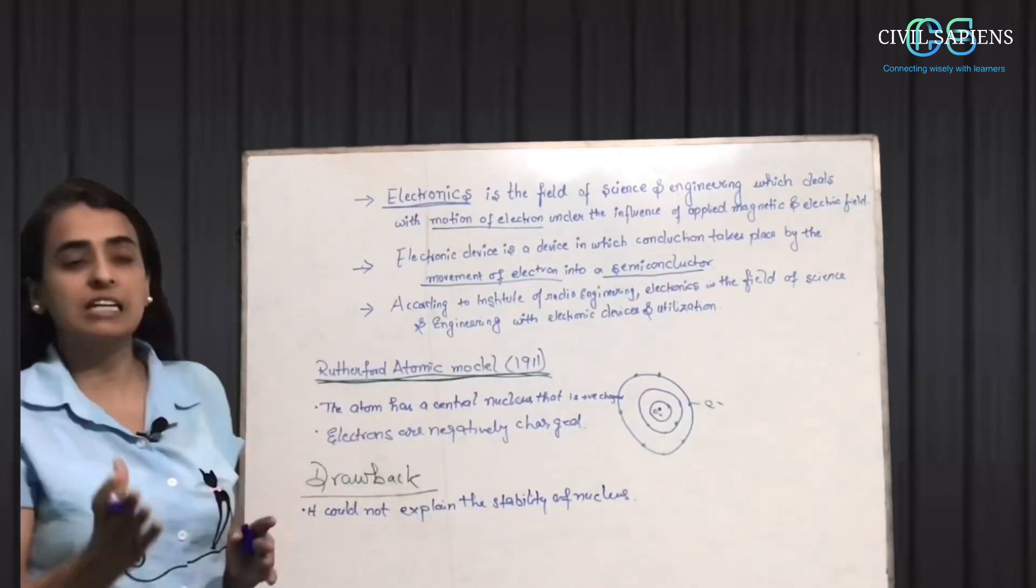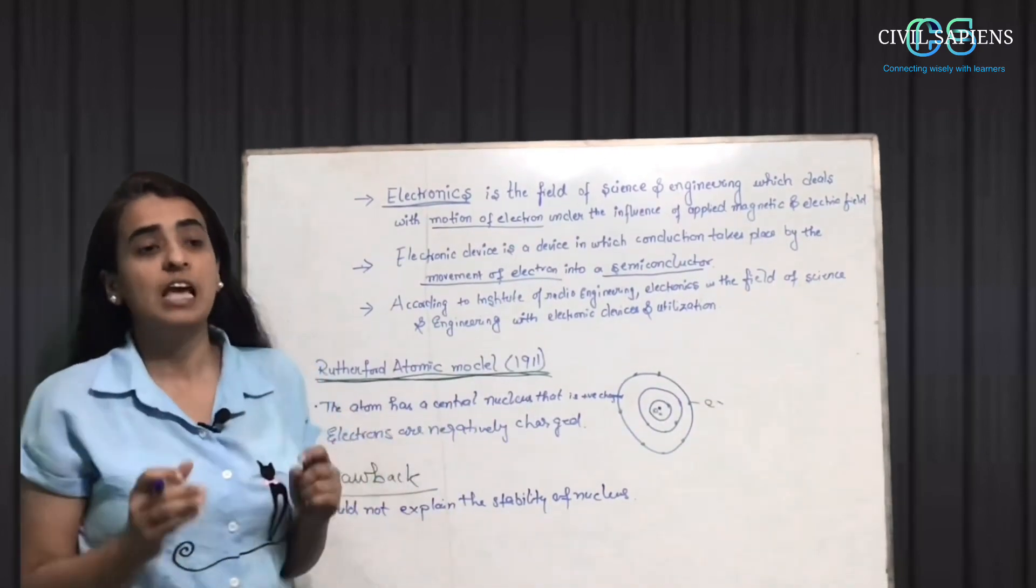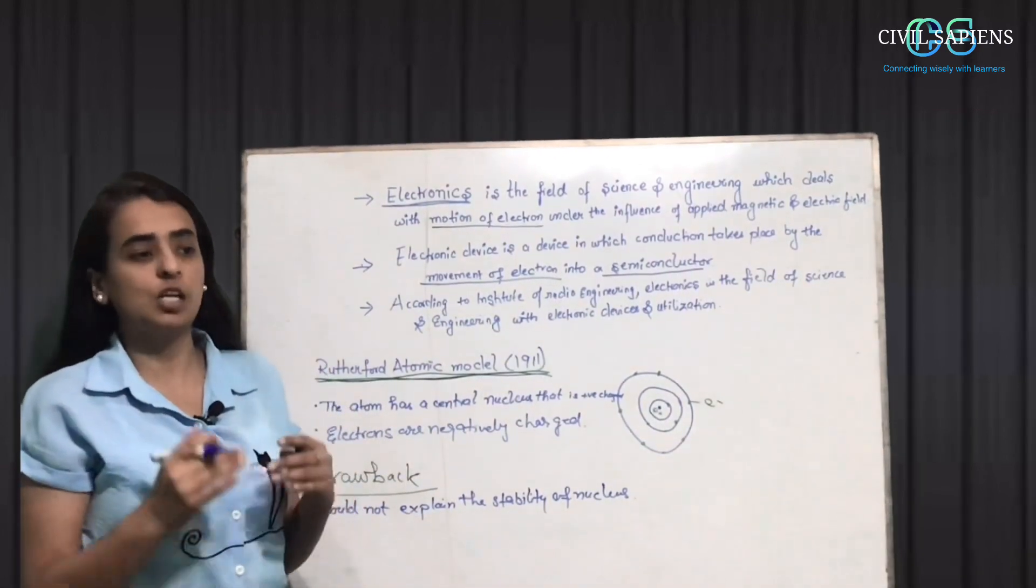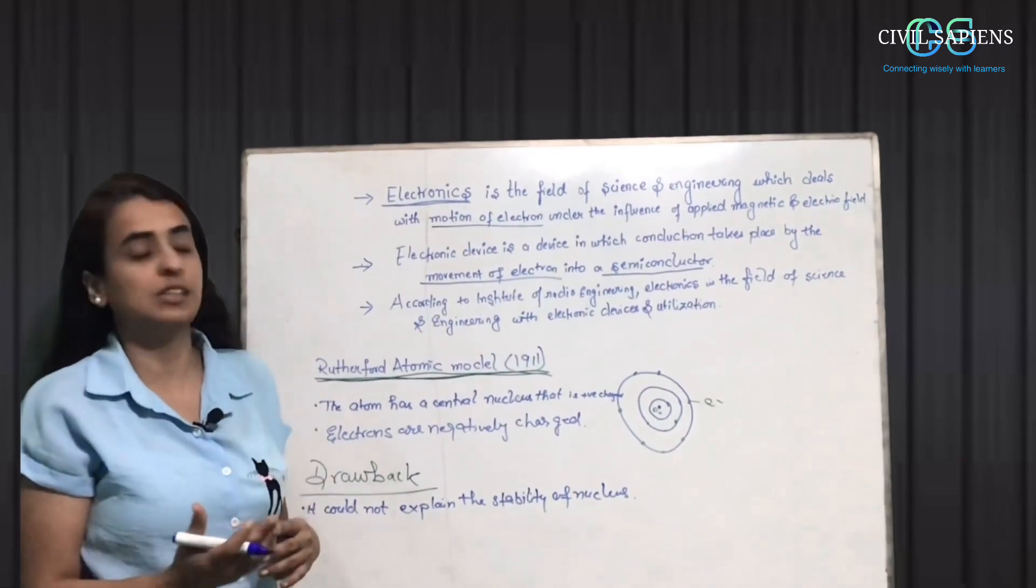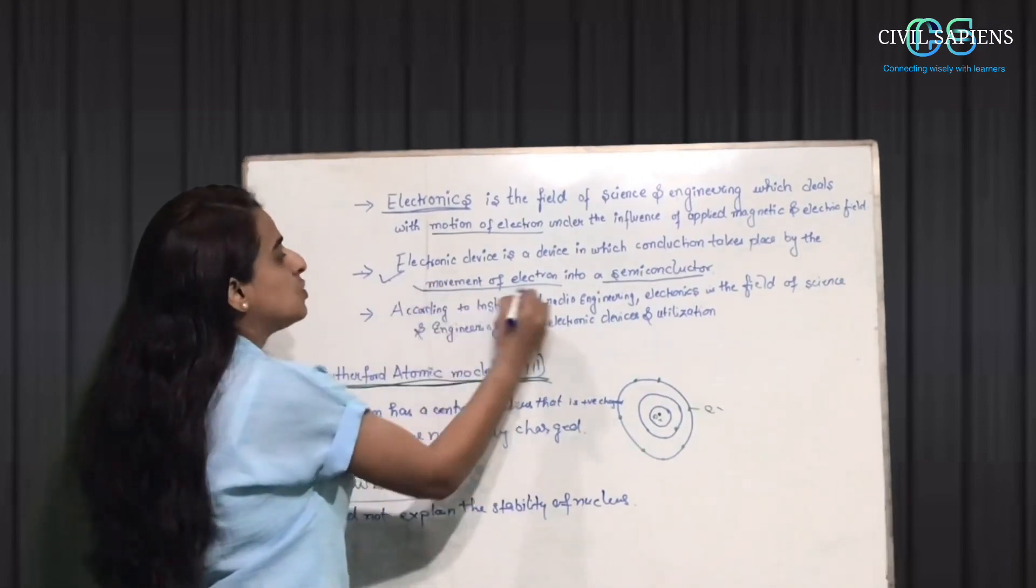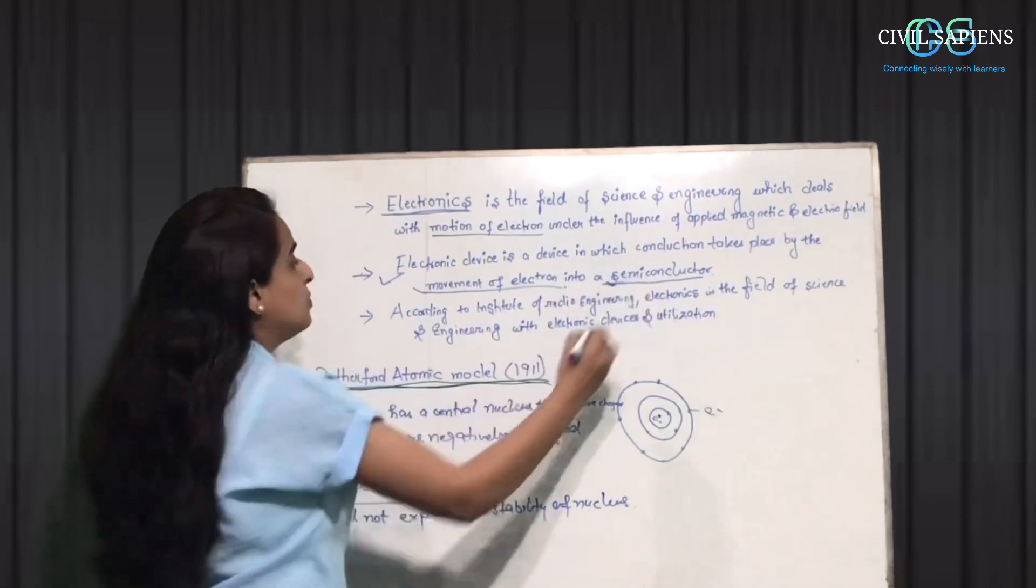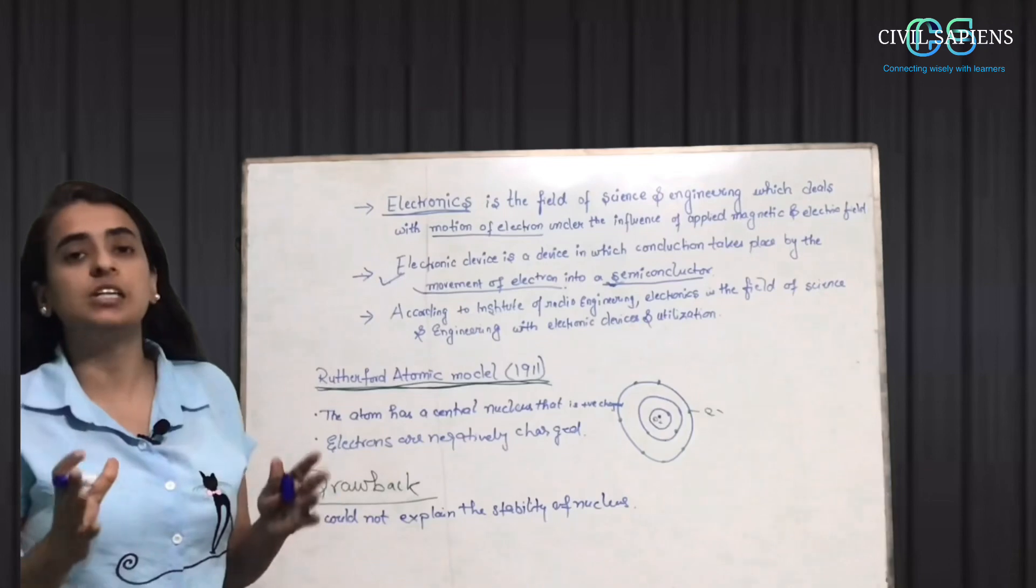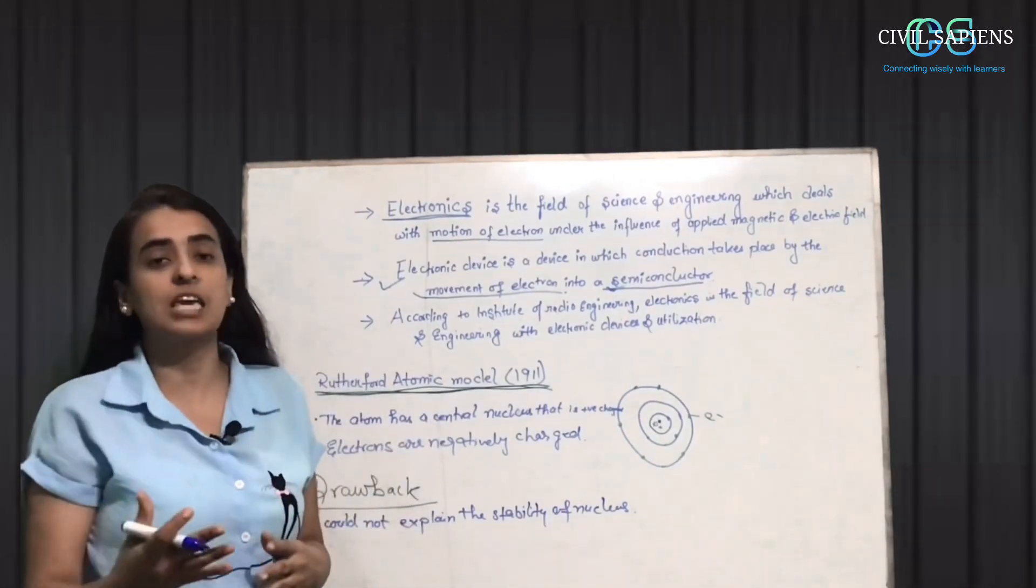If you ask, what is the difference in electrical and electronics? When we talk about electrical terms, we talk about conductor. And when we are talking about electronics, we are talking about the movement of electrons in a semiconductor. Semiconductor is a very important term in electronics. We will see about semiconductors.